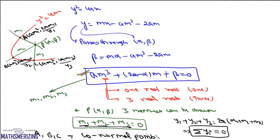So for co-normal points, y1 + y2 + y3 must be zero and m1 + m2 + m3 must also be zero. This is the condition for co-normal points on a parabola. Co-normal points are those points on the parabola at which normals drawn will be concurrent at a point.